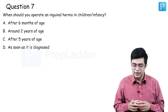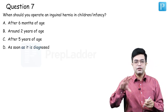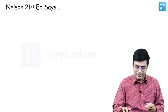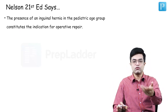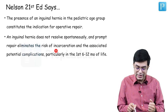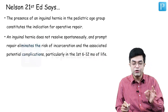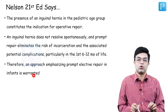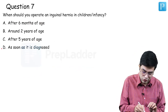Question number seven: when should you operate an inguinal hernia in children? An indirect repeat question. Nelson clearly says presence of inguinal hernia in pediatric age group constitutes indication for operative repair — if it is there, you have to operate it. An inguinal hernia does not resolve spontaneously and prompt repair eliminates risk of incarceration, particularly in the first 6–12 months of life. It should be operated whenever it comes to medical attention. Answer: as soon as it is diagnosed.